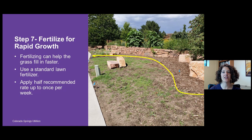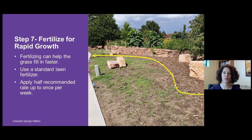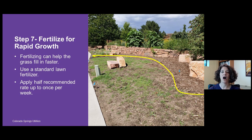Step seven is to fertilize for rapid growth. Once seed is germinated or plugs start to grow, the area may look sparse with bare areas between plants. To get your grass to fill in faster, use a standard lawn fertilizer. Colorado State University Extension's turfgrass specialist recommends applying up to half the recommended rate on the bag, or half a pound of nitrogen per thousand square feet, up to once per week. Within a few months you'll have good grass coverage.